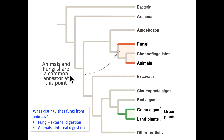If we look at a phylogenetic tree, we'll see that fungi are very closely related to animals — they share a common ancestor at the point shown with the circle. You might ask yourself then, what distinguishes a fungus from an animal? It has to do with their modes of nutrition. Fungi have an external digestion system, whereas animals have internal digestion systems.